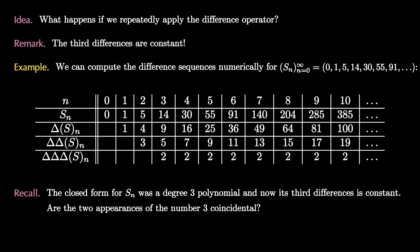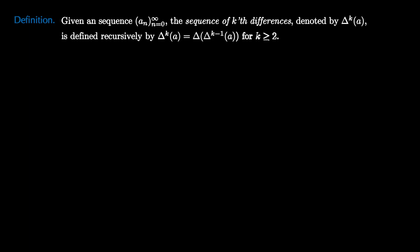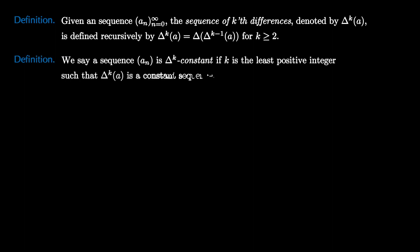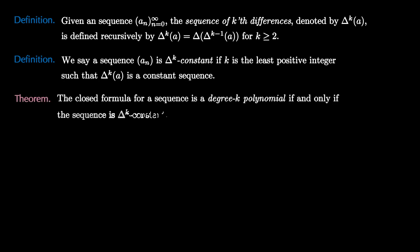Recall that the closed form for S_n we found geometrically was a degree 3 polynomial, and now we see that the sequence has constant third differences. Are the two appearances of the number 3 coincidental? The major theorem is: the closed formula for a sequence is a degree k polynomial if and only if the sequence is delta-k constant, meaning k is the least positive integer such that the kth differences form a constant sequence.